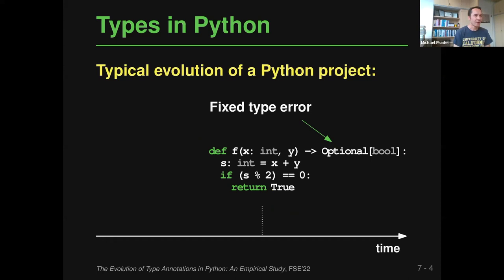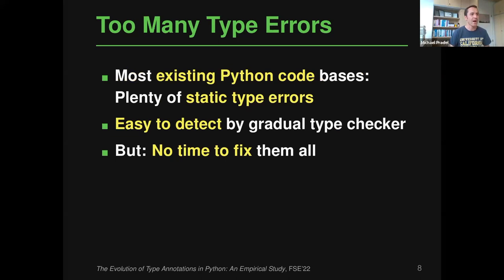This is how many projects evolve. If you look at a large existing Python codebase somewhere between the second and third stage of this evolution, you'll find it has plenty of static type errors. These are simple to detect by running a gradual type checker like MyPy or Pyre. But developers are often not able or willing, or don't have enough time, to fix these static type errors — meaning gradual type checking becomes limited in its usefulness because you see so many errors constantly.